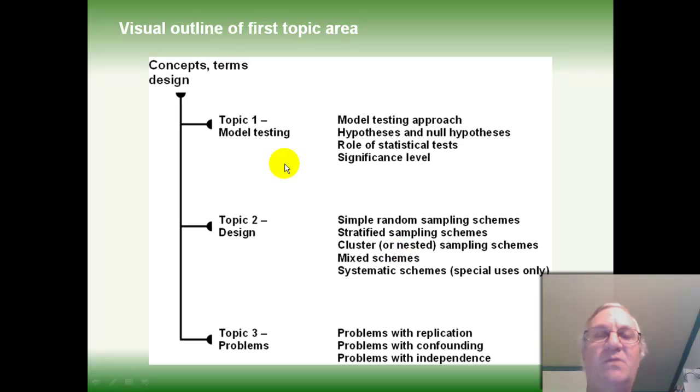If we recap in the first topic area, we're looking at model testing. We're looking at issues related to design and problems that occur if we don't pay careful attention to the design of the study. In the first topic, we look at the model testing approach, what hypotheses and null hypotheses mean in that model testing approach, what the role of statistical test is and what the significance level is and how it relates to type 1 and type 2 errors. In the next of these short mini lectures, I'll look at topic 2.